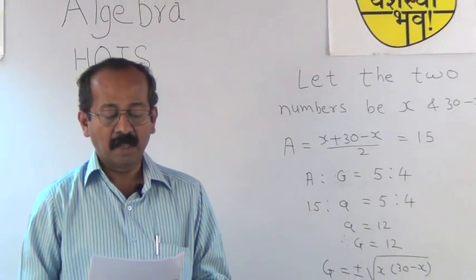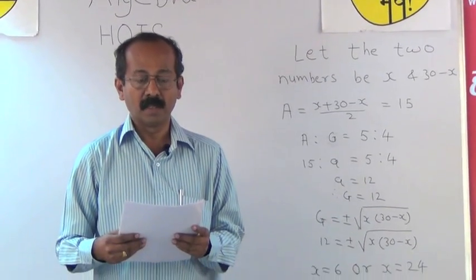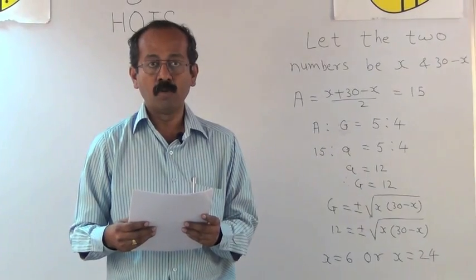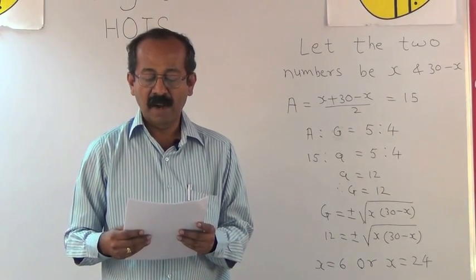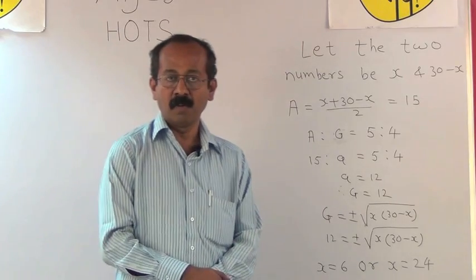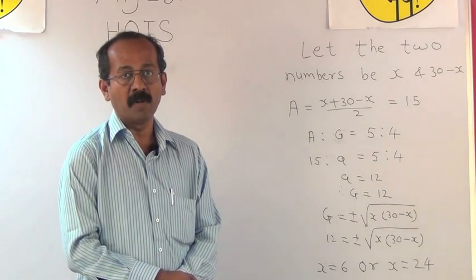If the arithmetic mean and geometric mean of two numbers are in ratio 5 is to 4 and the sum of two numbers is 30, then find these numbers. This problem is from chapter one, that is arithmetic progression and geometric progression.